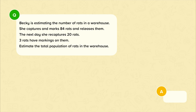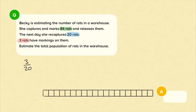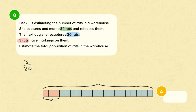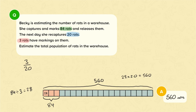In the recaptured sample, 3 out of 20 rats have been marked, so 3 out of 20 of all the rats in the warehouse are marked. There were 84 rats originally marked, so 84 is 3/20ths of the total population. One of these 20ths is 84 divided by 3, which is 28. To find the total amount, we multiply 28 by 20, which is 560. So our estimate is that there are 560 rats in the warehouse.